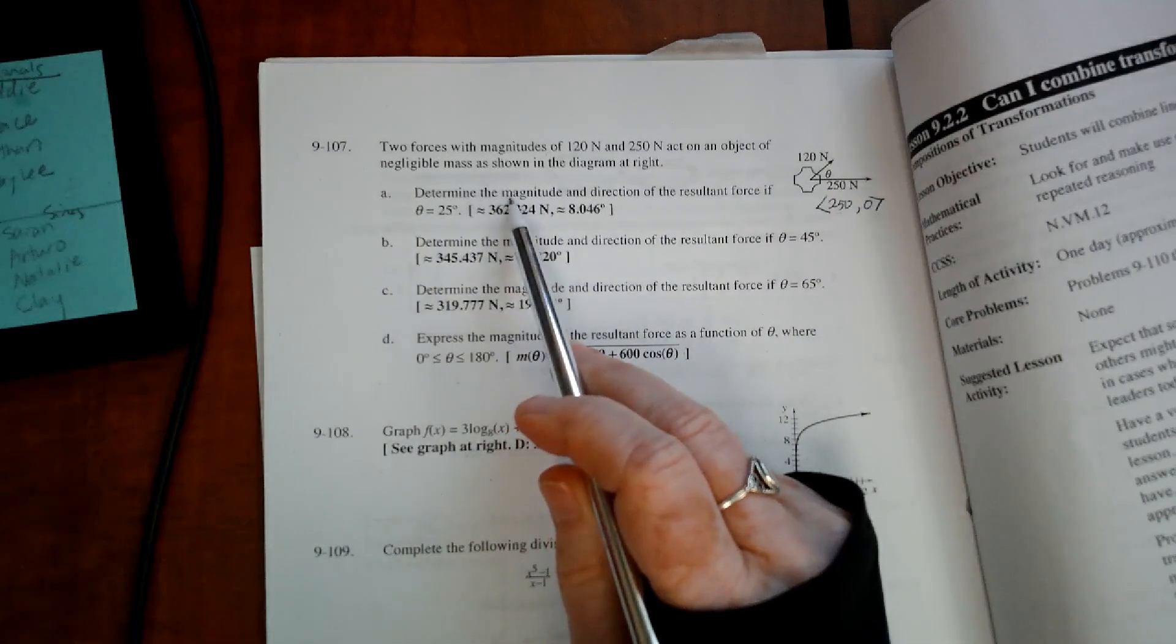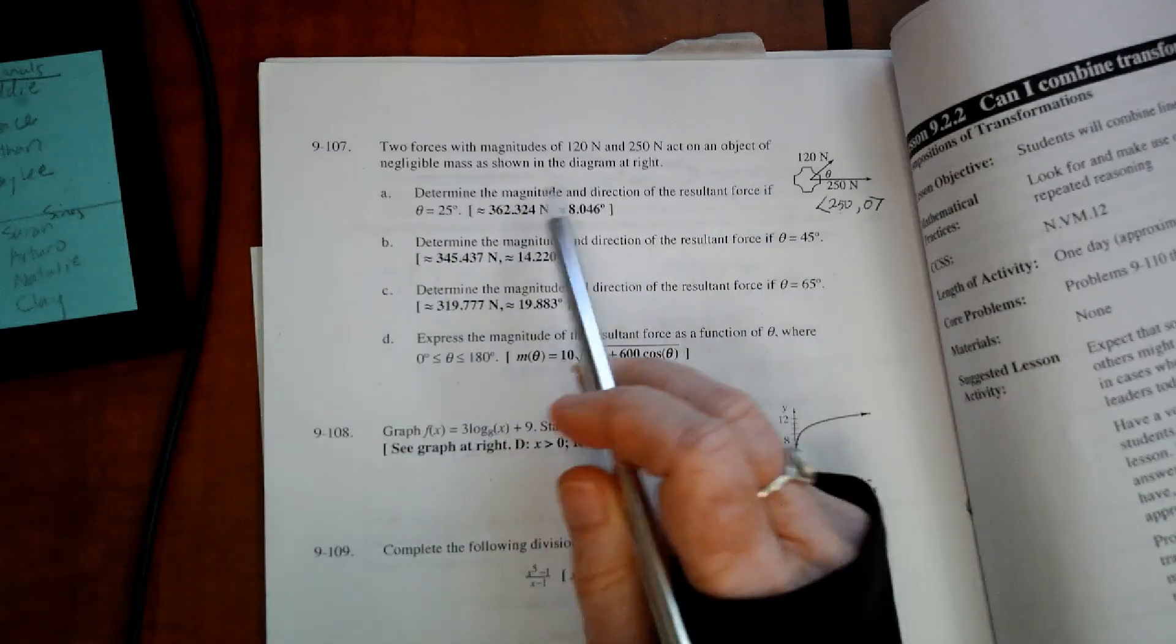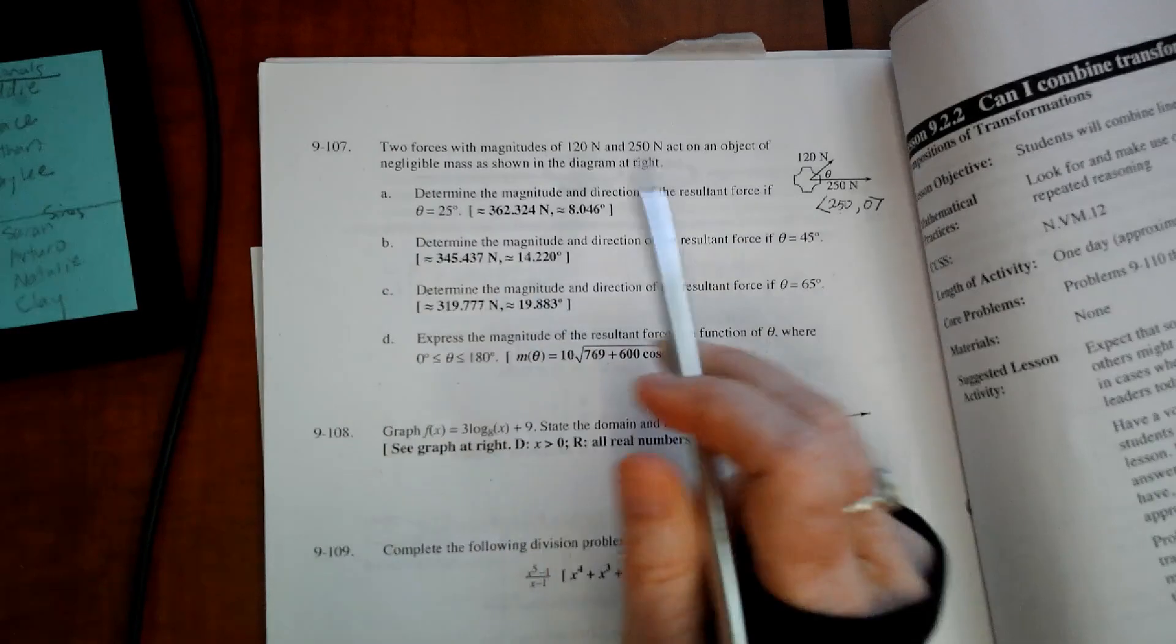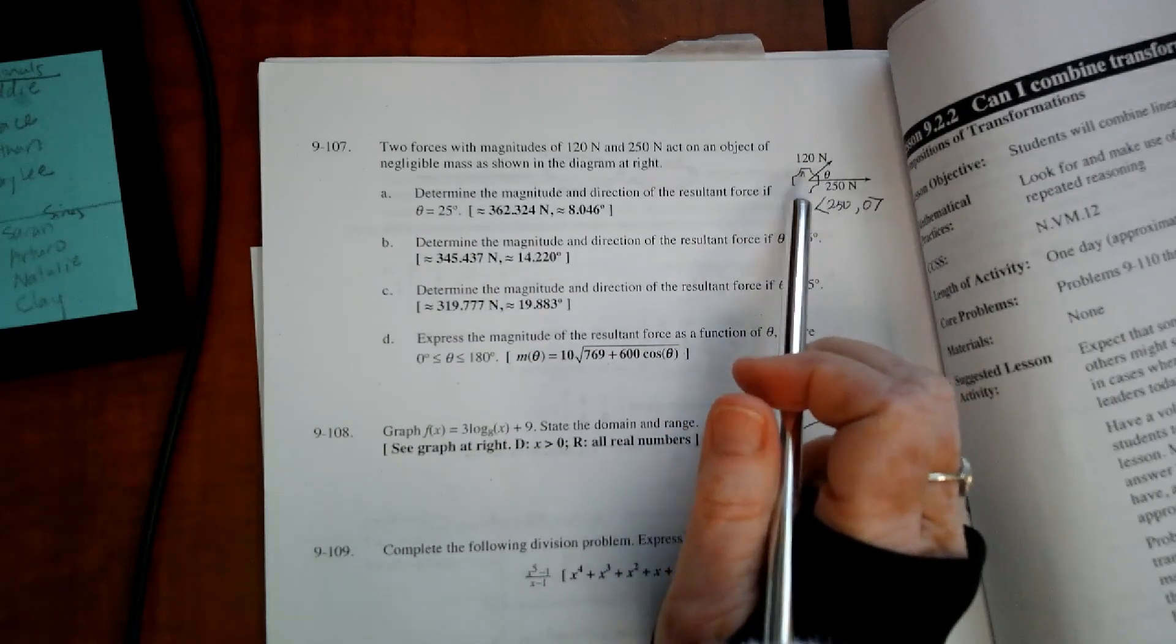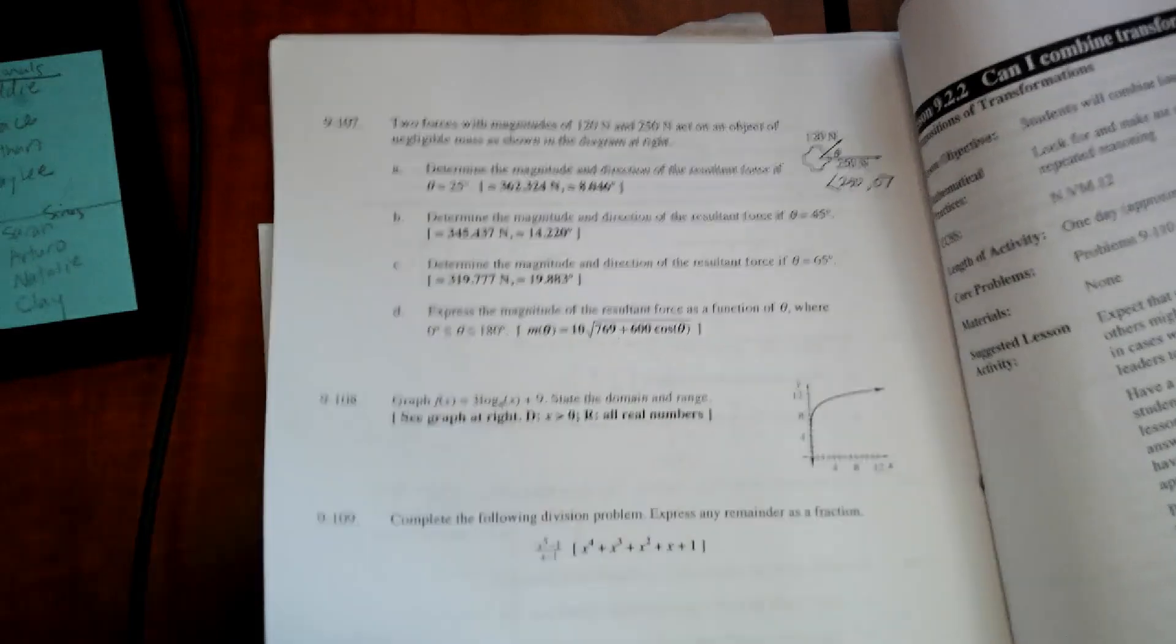It says, determine the magnitude and direction of the resultant force if theta is 25 degrees. So they want that angle to be 25. Let me show what I did.